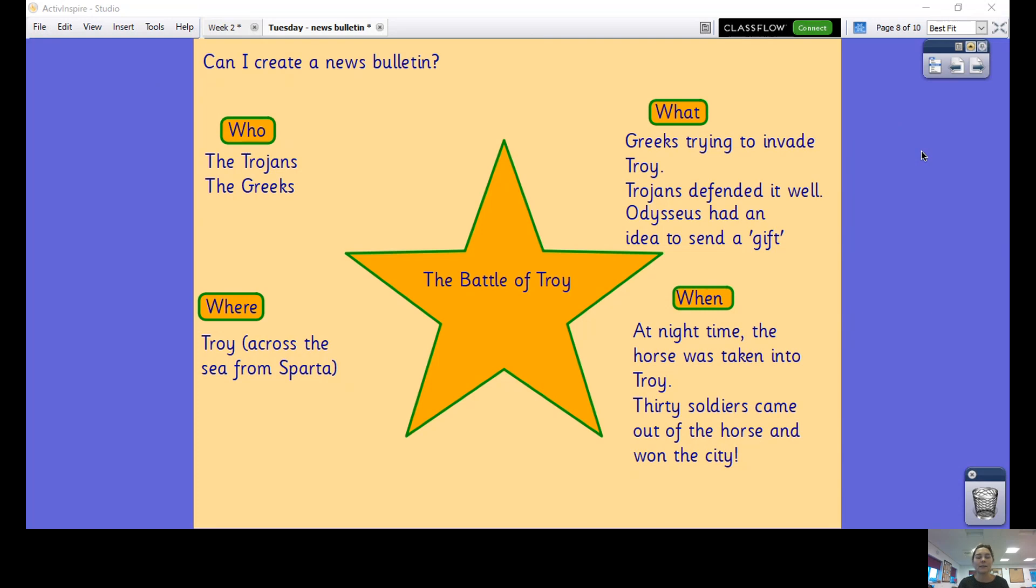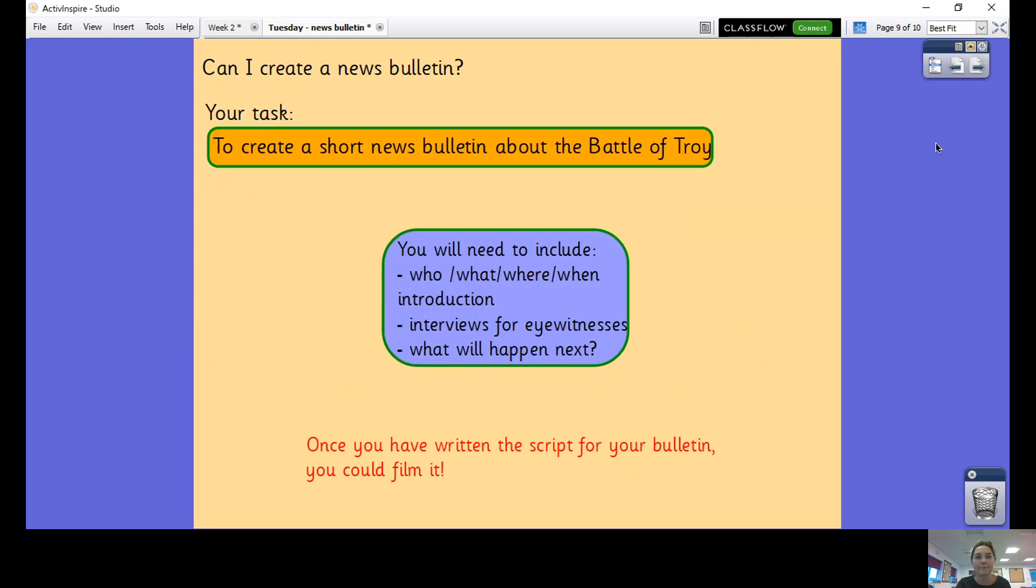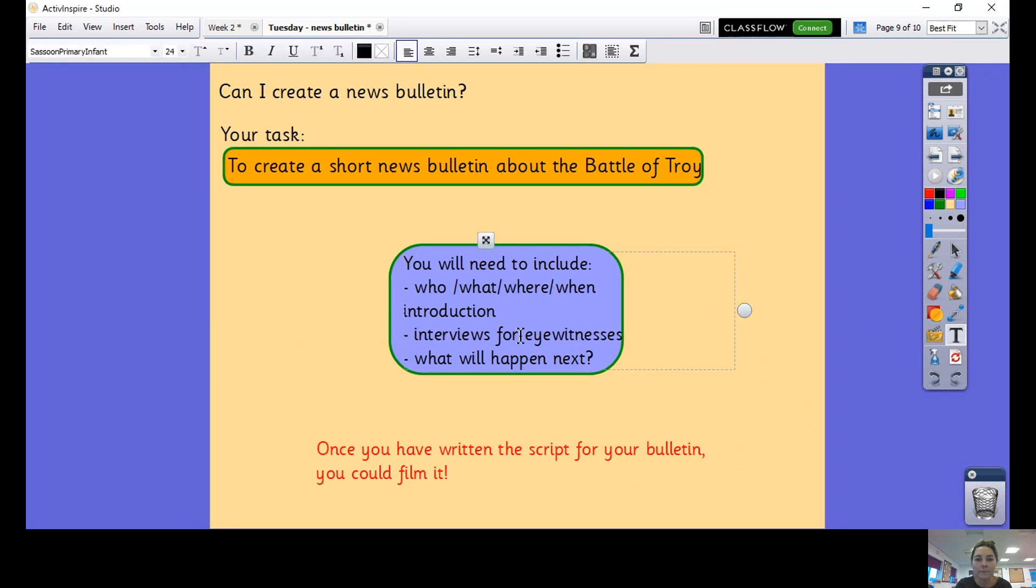Your task is to create a short news bulletin about the Battle of Troy. You're going to need to include the who, what, where and when in your introduction. You're going to need some interviews from some eyewitnesses. I've got four eyewitnesses that need to be from eyewitnesses, and you need to have a 'what will happen next.' So what's going to happen next after the Battle of Troy, now they have been defeated. Once you've written the script for your bulletin, you could film it if you'd like.